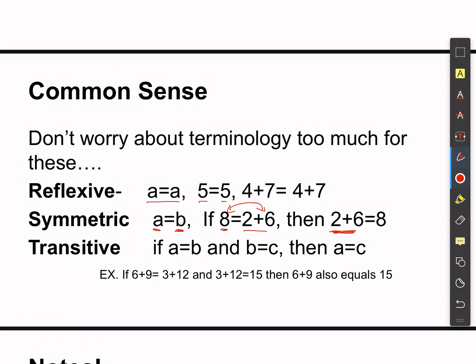An equal sign — in all of algebra — you can always think of it as a balanced scale. It's one of those scales with plates on either side. With an equation, we always have the same amount on both sides — they're balanced. An equation means something is balanced; when you see that equal sign, the visual is the scale.